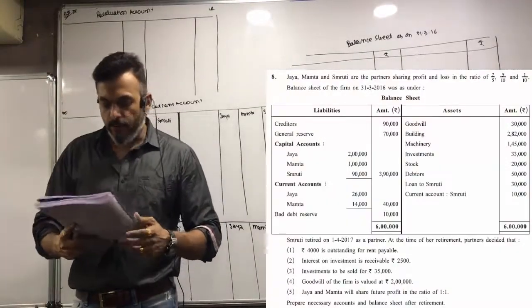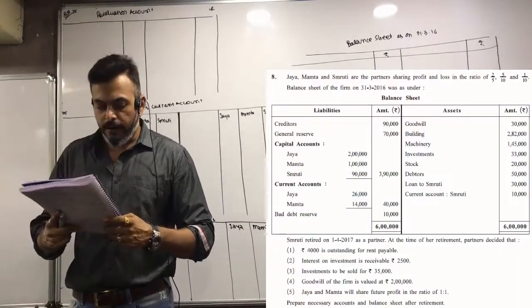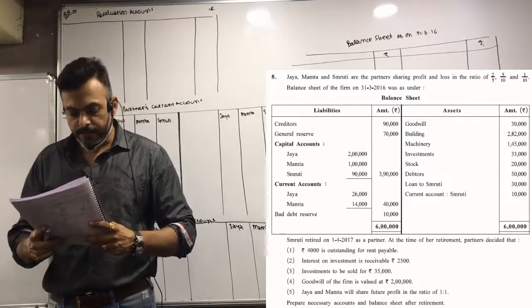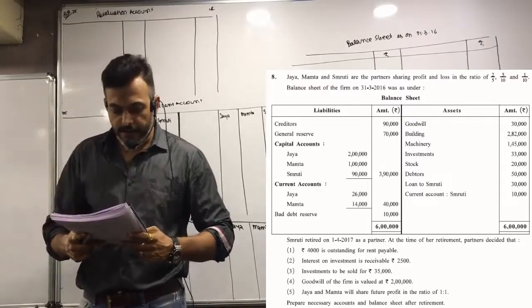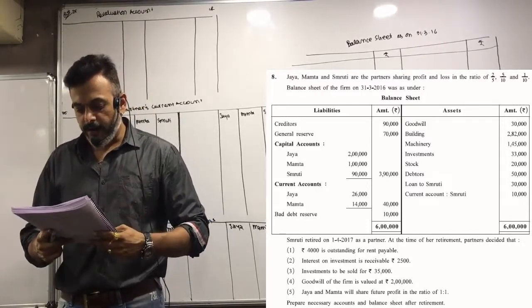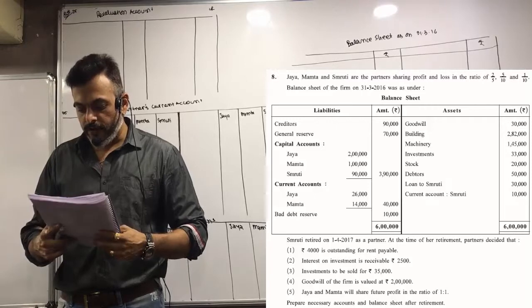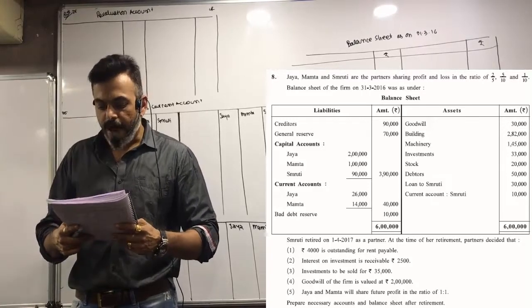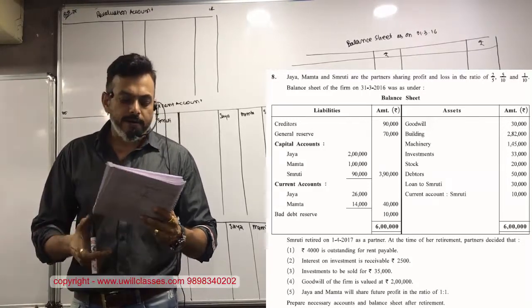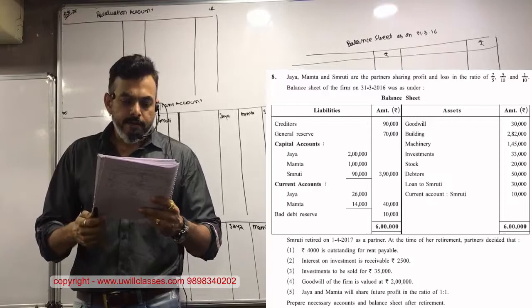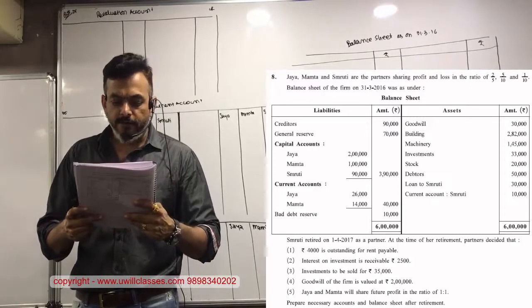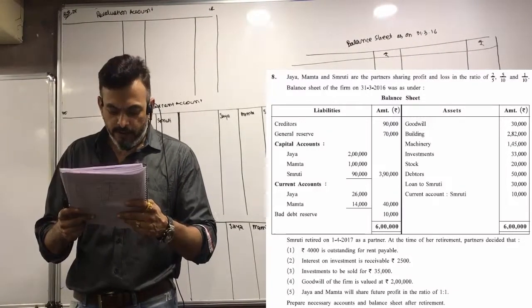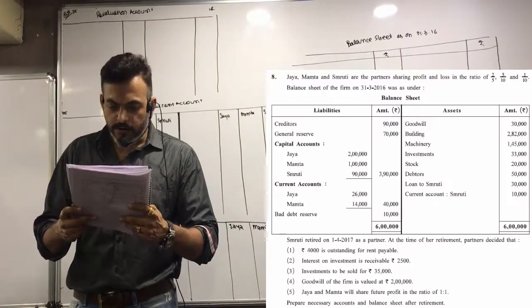This is question number 267, question about 8. Jaya, Mamata and Smriti are partners sharing profit and loss in the ratio of 2/5, 5/10 and 1/10. The balance sheet of the firm as of 31-3-2016 was as given.